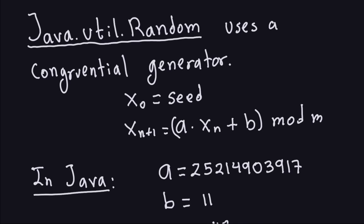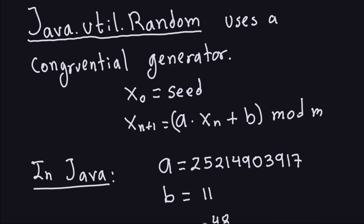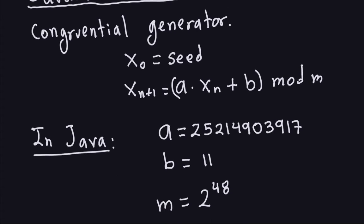Java implements this as follows. The multiplier a is the specific number you see in the Java implementation. The increment b in Java is 11, and the modulus m is 2 to the 48. That's how Java creates those random values internally.